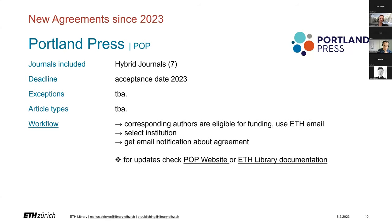With Portland Press, you can publish unlimited in seven hybrid journals, given that the acceptance date is in 2023. As with all publishers, please check our documentation website before submitting for updated specifications regarding exceptions and article types.